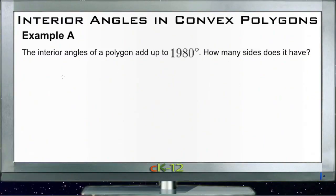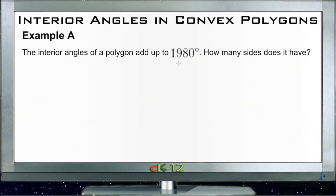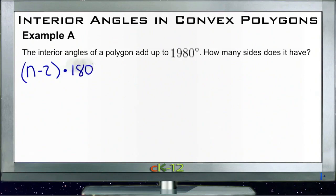Let's tackle the example questions for interior angles of convex polygons. For example A, the interior angles of a polygon add up to 180 degrees and the question is how many sides does it have. Remember that the formula for finding the interior angles is n minus 2 times 180, which gives us the total number of degrees of the interior angles of a regular polygon.